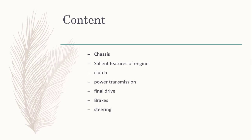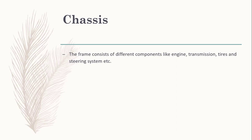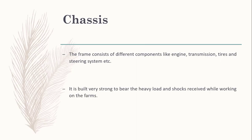Today the topic we are going to discuss is chassis, which is an important part of any vehicle — not just the tractor, but for any vehicle — because all of the load is onto the chassis only. It should be hard-running and have enough strength to hold the load and vibrations. In reference to tractors, a chassis is a frame consisting of different components like engine, transmission, tires, and steering system. It should be designed to bear the load as well as any kind of vibration or jerks from the road, and should be built strong to bear heavy loads and shocks received while working on the farms.